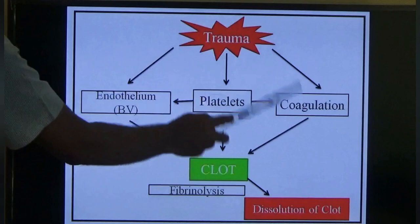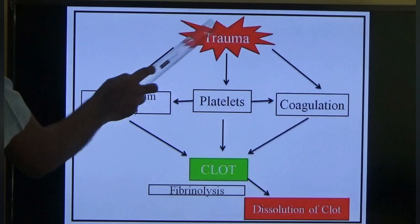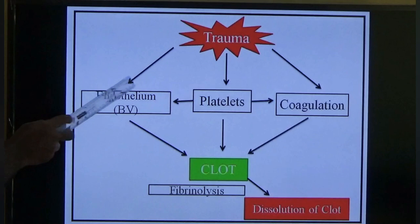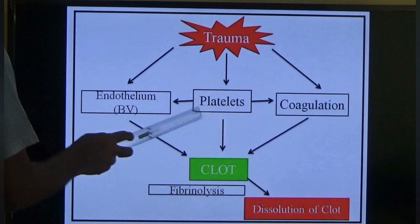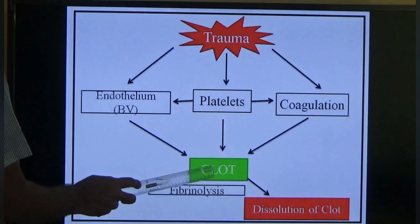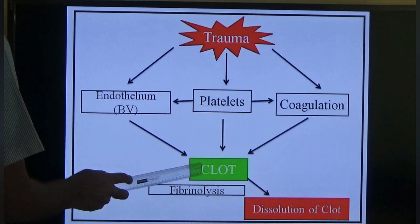When any blood vessel is injured, three components present in the blood vessel get activated: endothelium, which lines the blood vessels; platelets (also called thrombocytes); and coagulation factors present in plasma. All three get activated, leading to clot formation. The function of this clot is to prevent blood loss from the blood vessels.